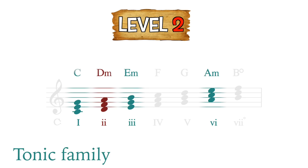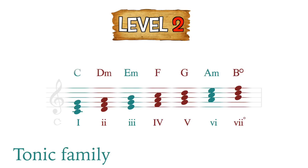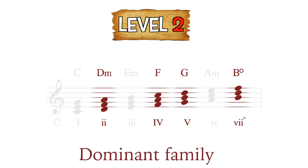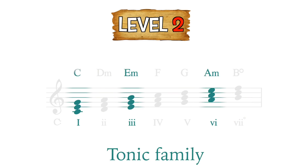The remaining chords — the II, IV, V, and VII chords — belong to the dominant family of chords, since they share a lot of common notes. Again, the dominant-type chords want to resolve to the tonic-type chords. Let's see how Over the Rainbow sounds using only the diatonic chords of C major.